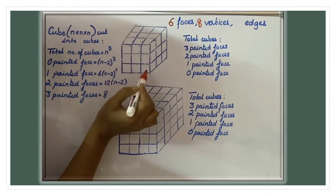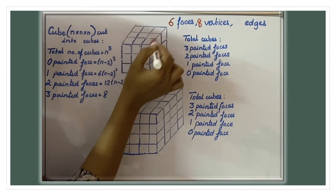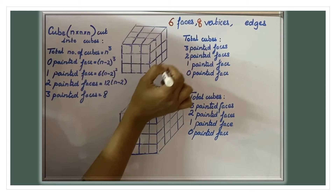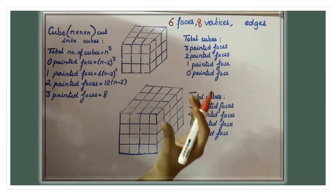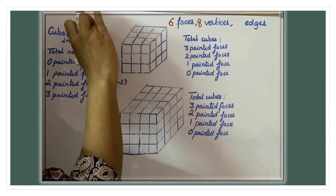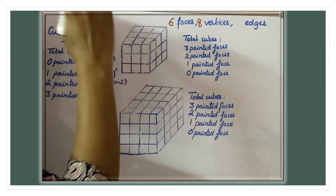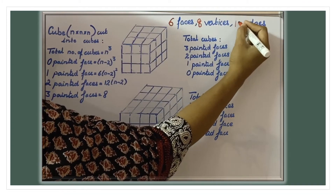How many edges are there? You can count nine visible edges, and three more are hidden. So total twelve edges.